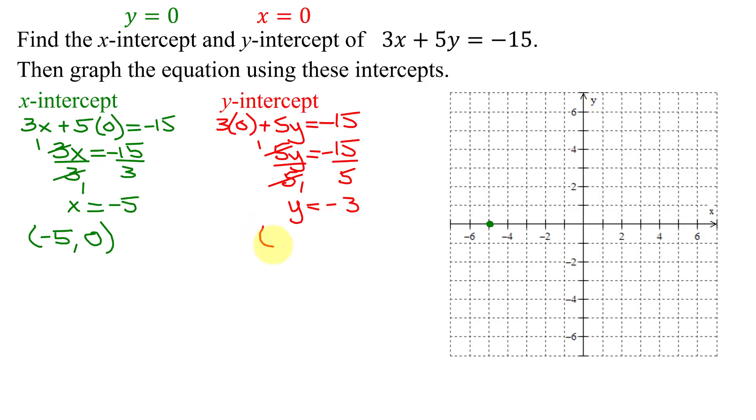So the coordinates of the y-intercept, x is 0, and y is negative 3. So plotting that point, starting at the origin, x is 0, go nowhere in the x direction, y is negative 3, go down 3 in the y direction.